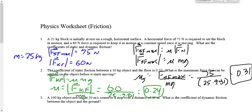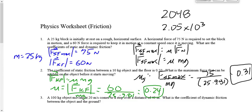Should we write 0.24 as 2.4 times 10 to the negative 1? It doesn't matter — both are two significant digits and both are correct. The only reason you'd have to use scientific notation is if you need a specific number of digits that can't be expressed otherwise, like writing 2048 as 2.05 times 10 to the 3 for three significant digits. If you can express it correctly without scientific notation, it doesn't matter.